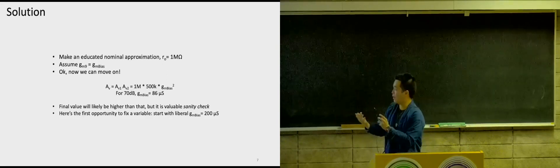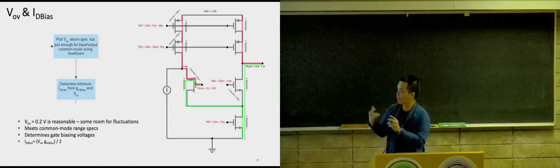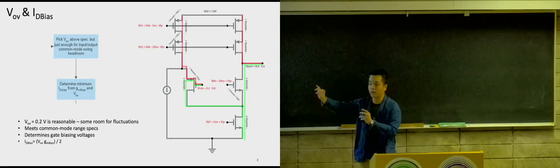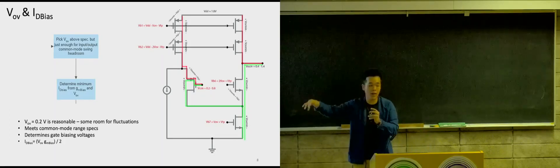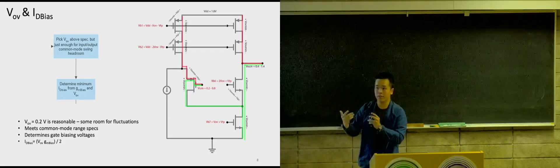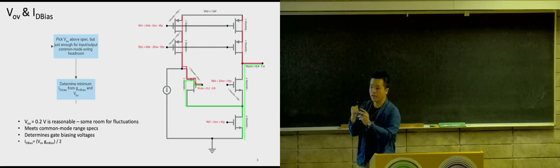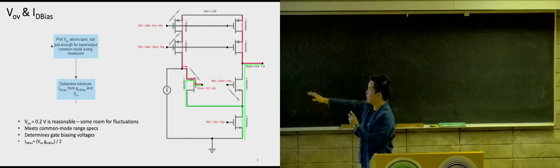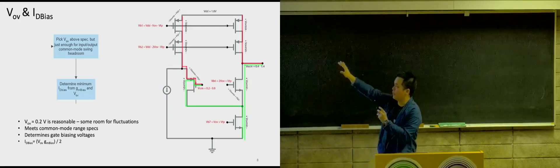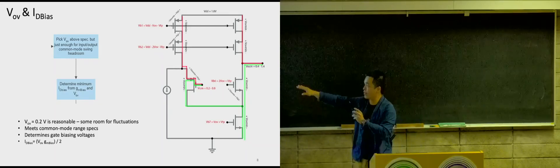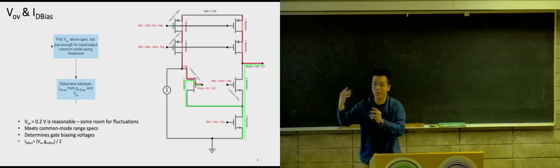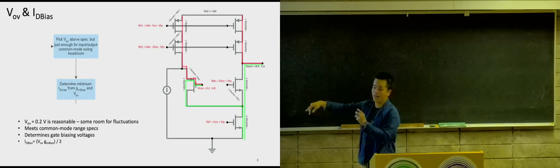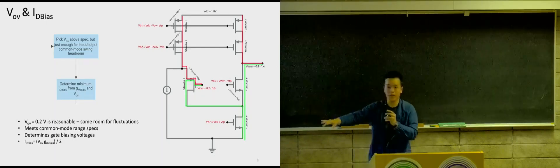From there, we can derive where we actually pick the overdrive voltage VOV. I chose a value of 0.2 volts. This is reasonable because it allows common-mode swing on inputs and outputs, but also allows for some fluctuations in simulation — I don't want to pick the lowest VOV of 0.15, because if it fluctuates, I will violate that condition. Now that I've also picked VOV, I've informed all the voltage biasings at all the gates of the transistors, in terms of VOV and V-thresholds, nicely biased by the matched batteries. From that, we can determine the bias drain current as a function of VOV and GM bias.